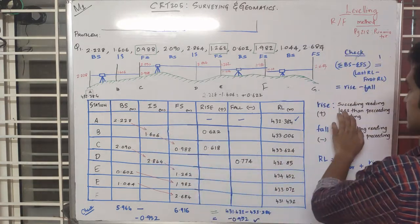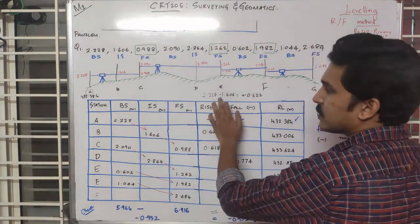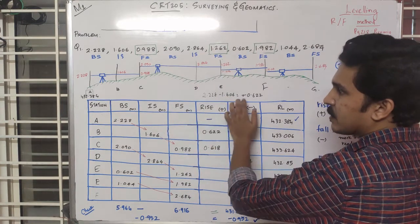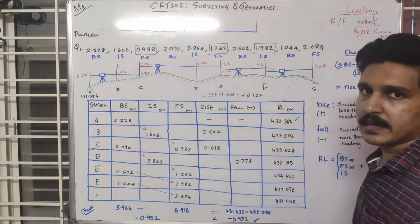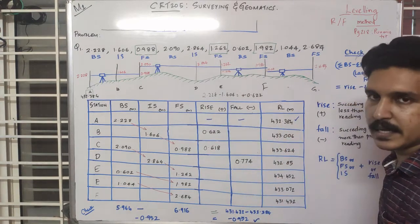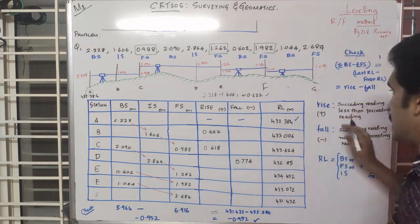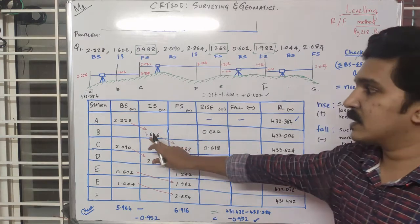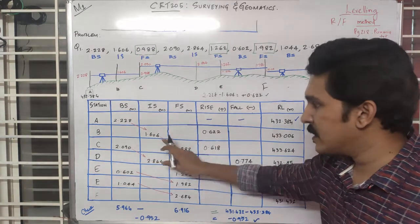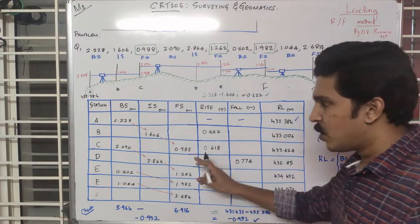When the succeeding reading is less than the preceding reading, the result is a rise. If your result is a positive value, then you will get a positive rise value. This positive value confirms it is a rise from the first through to the fifth value.